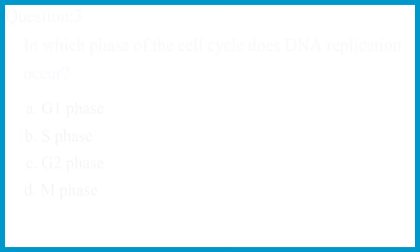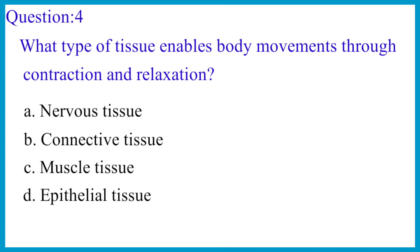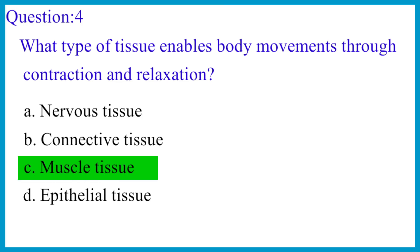Question number 4. What type of tissue enables body movements through contraction and relaxation? The correct answer is option C: Muscle tissue.